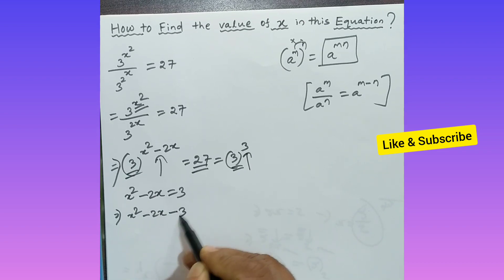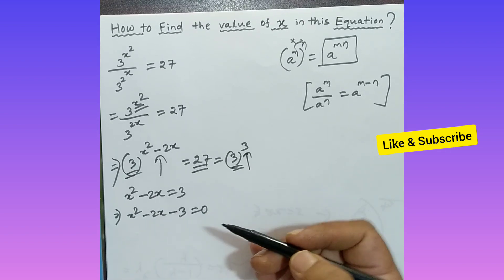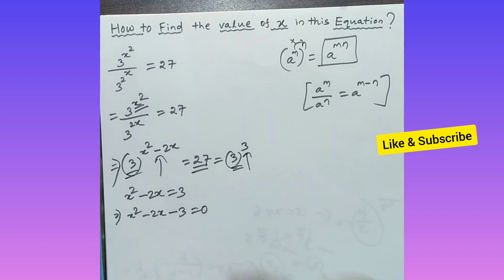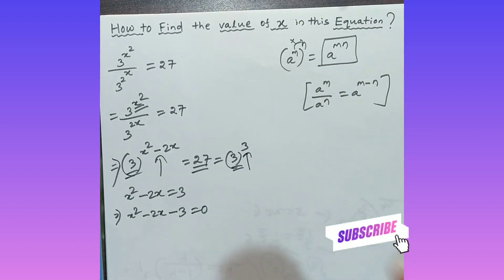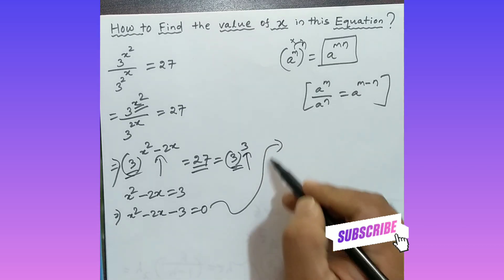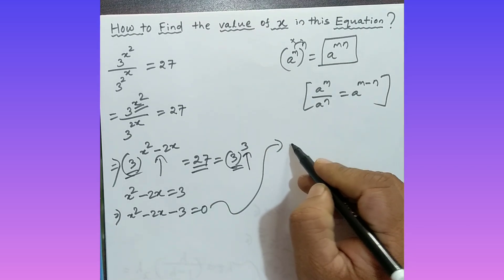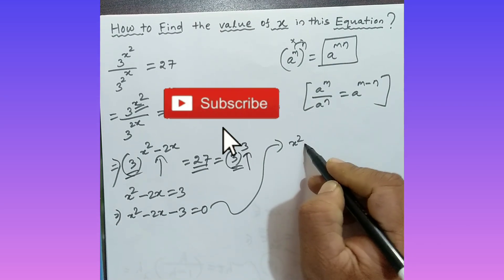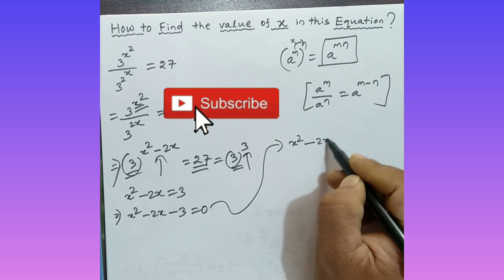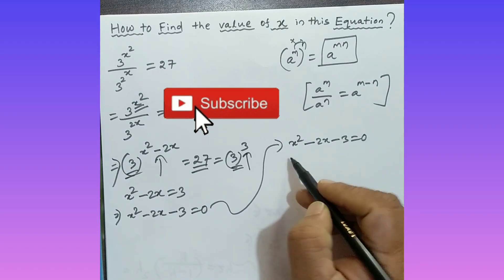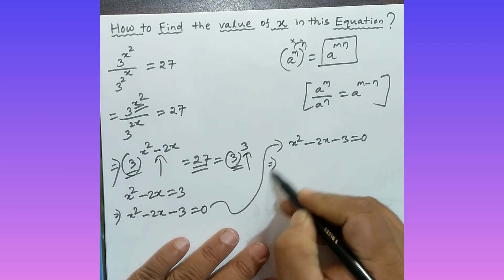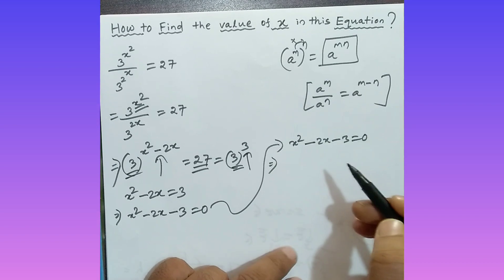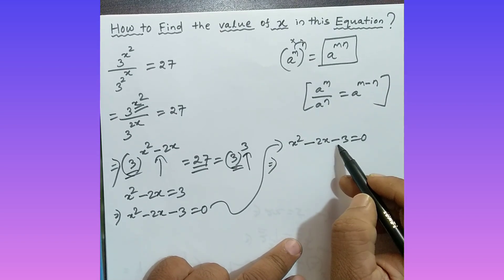So x squared minus 2x equals 3. Rearranging, we write x squared minus 2x minus 3 equals zero. This is a quadratic equation, and now we need to solve it.